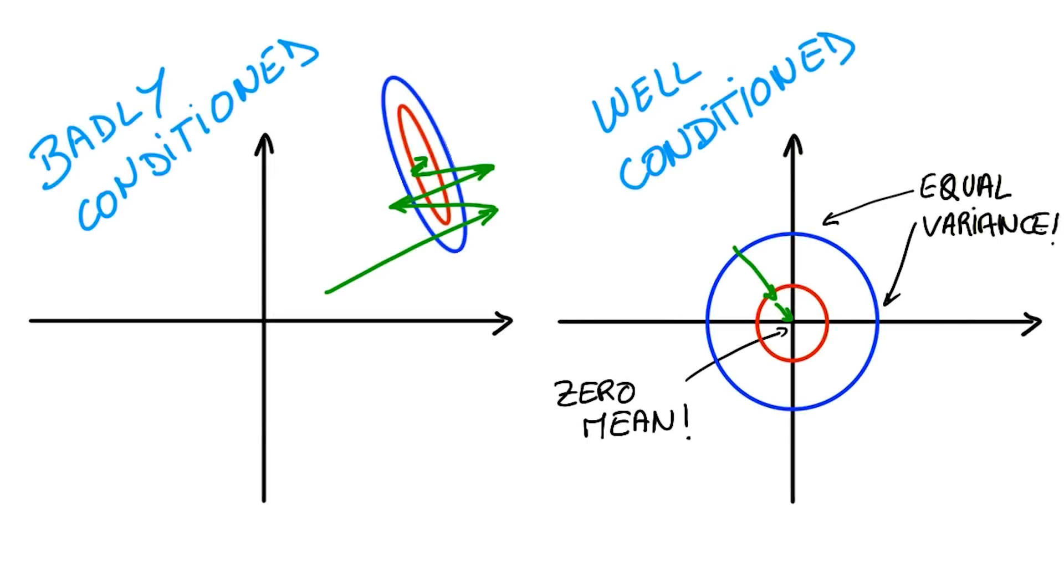On top of the numerical issues, there are also really good mathematical reasons to keep values you compute roughly around a mean of 0 and equal variance when you're doing optimization. A badly conditioned problem means that the optimizer has to do a lot of searching to find a good solution. A well conditioned problem makes it a lot easier for the optimizer to do its job.